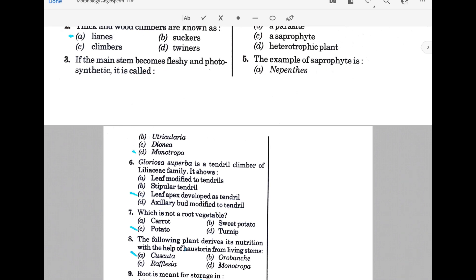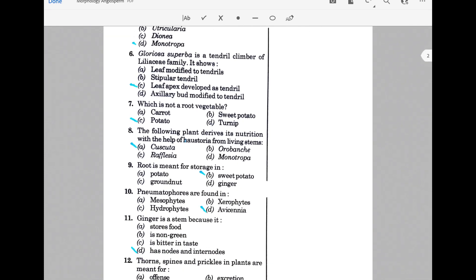Which is not a root vegetable? The answer is potato, as we know potato is a modified stem. Cuscuta derives its nutrition with the help of haustoria from living stems. Cuscuta is a parasite. Root is meant for storage in sweet potato, because potato and ginger are modified stems.